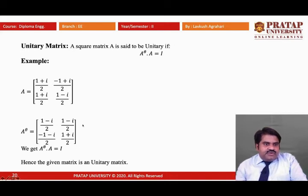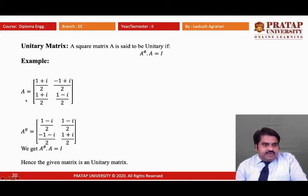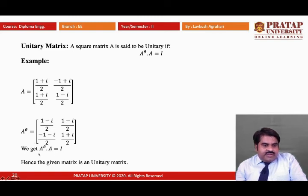Now, the unitary matrix. A square matrix A is called a unitary matrix if Aθ multiplied by A equals an identity matrix. In the example, matrix A is given and converted to Aθ; multiplying Aθ by A should give the identity matrix I. This is left as a homework exercise for students to verify — if the product equals I, then the matrix is unitary.